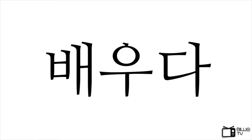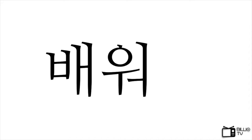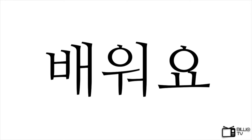Next verb is 배우다, which means 'to learn.' Make sure we only check the last letter of the stem, not the others. The last one has vowel OU. Cut off DA first. In this case, the vowel OU becomes WO. And we put YO next to it. So 배우다 becomes 배워요.